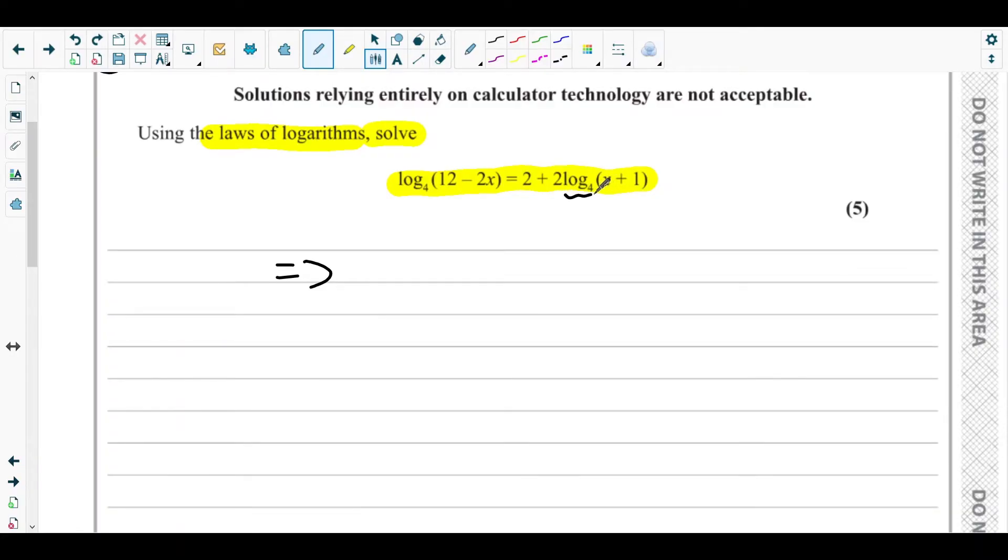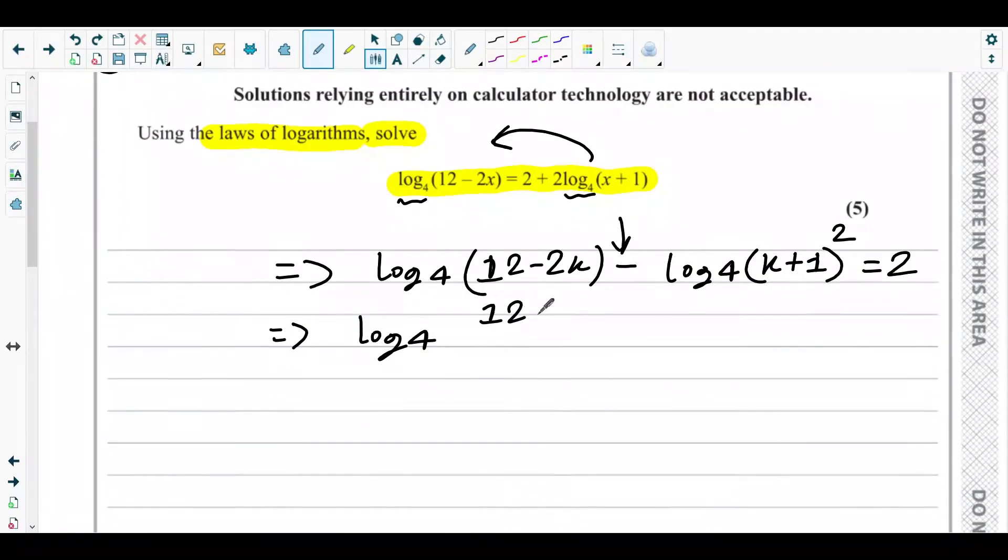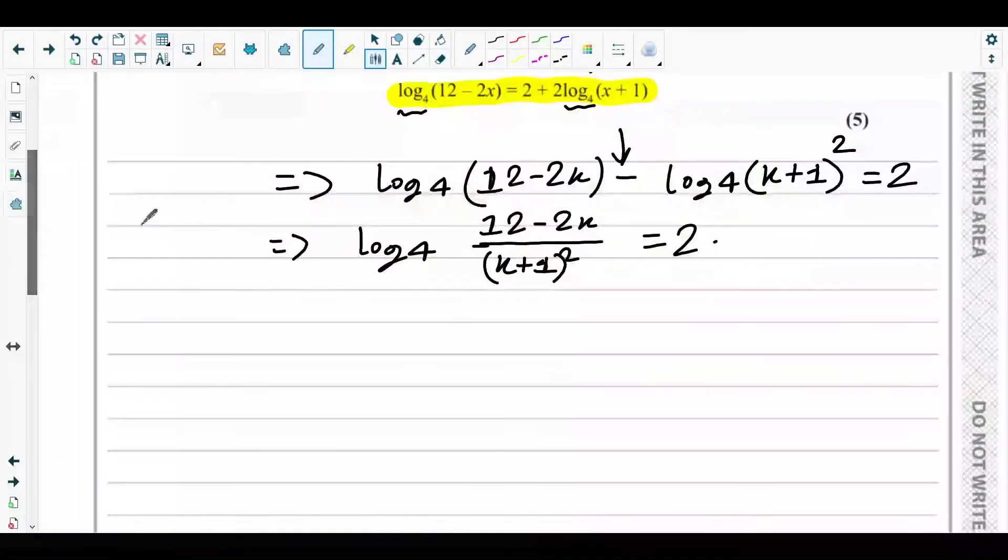At first, you have log with base 4 on both sides, so take this to the left side. What you will get is log 4 of (12 - 2x) minus 2 log base 4 of (x + 1) equals 2. Use the power rule to take the coefficient to the power. Since both logs have base 4 and they have subtraction between them, we can make them divide: log 4 of [(12 - 2x)/(x + 1)²] = 2.